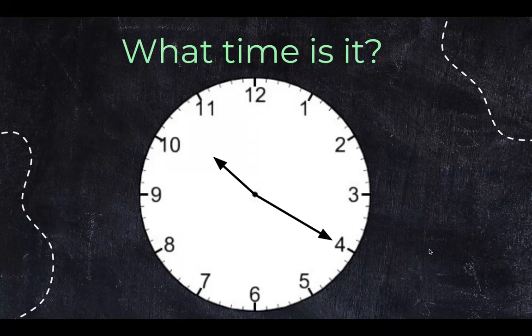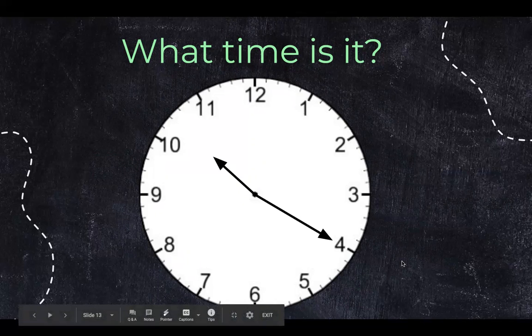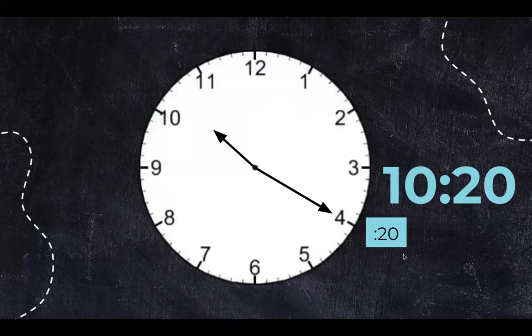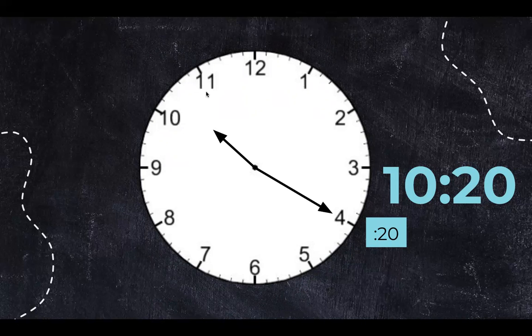What time is it here? Where is the hour hand pointing? And then can you count by five around the clock? It's pointing at ten. Remember the hour hand slowly moves to the eleven so it's not pointing right at ten but it's not eleven yet. And then zero five ten fifteen twenty.